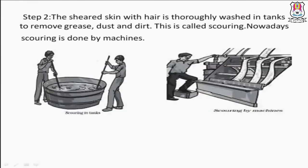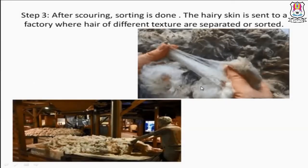Step 2 — Scouring: the shorn skin with the hair is thoroughly washed in tanks to remove grease, dirt, and dust. This is called scouring. Pahle hum logon ne hair remove kar di, ab unko wash karna padega, unke andar jo grease hai, jo dirt hai woh sab nikalna padega. Pahle manually kiya jaata tha, lekin aajkal scouring is done by machines.